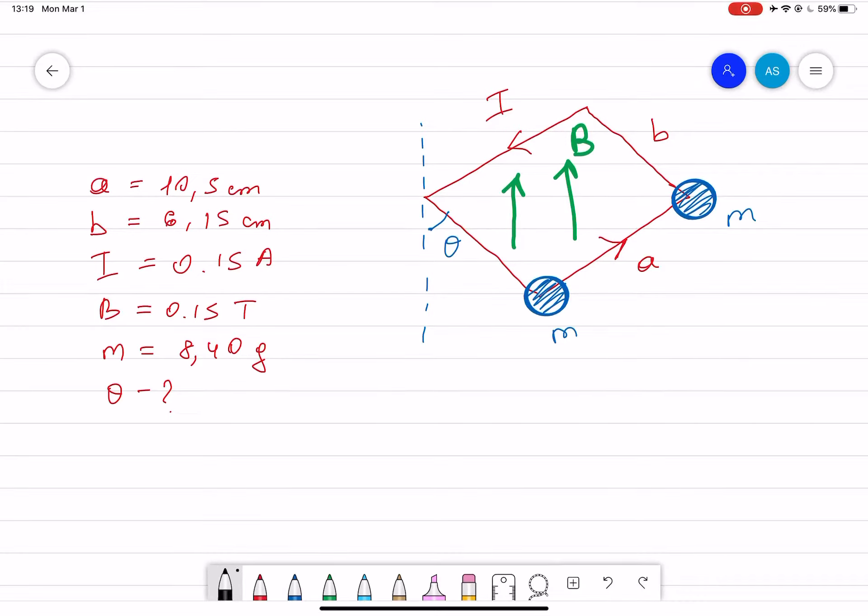In this problem we can see that we have a rectangular loop, the current passing through it, the magnetic field is pointing upwards, direction of current is also shown. Now we have to find the angle theta at which the loop is in equilibrium.